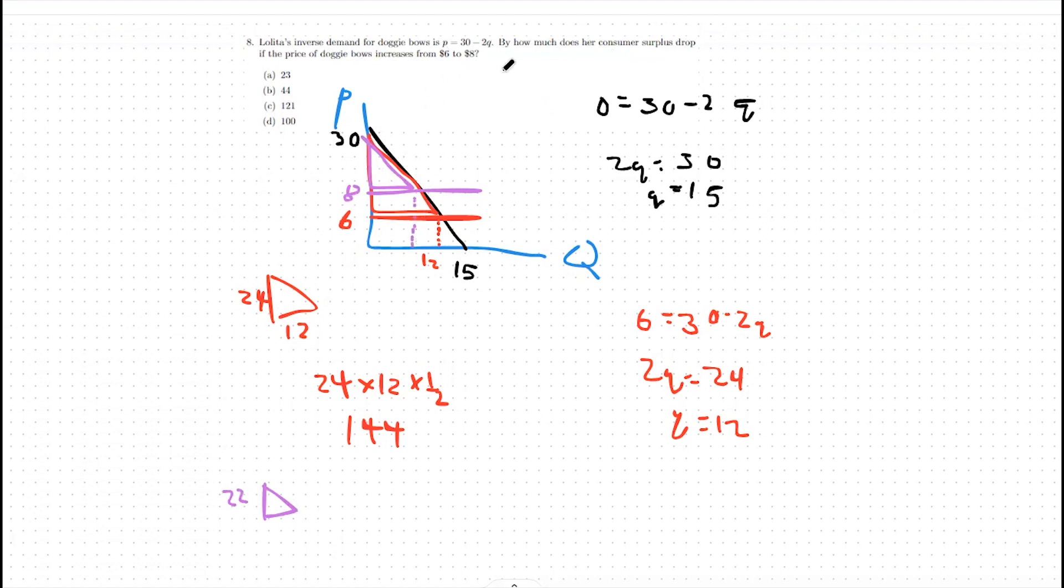And then we can find our quantity again using the same practice. So we're going to say 8 equals 30 minus 2q instead now. So 2q equals 22. So our quantity is now 11 instead of 12.